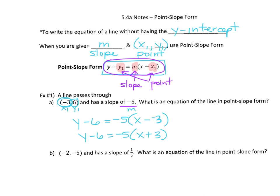This would be your answer: y − 6 = −5(x + 3). You just leave it like that — leave it in point-slope form.